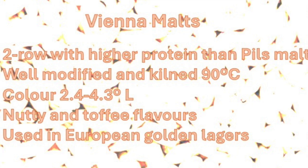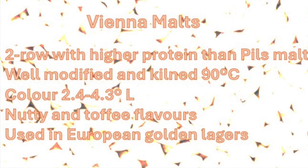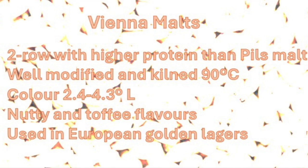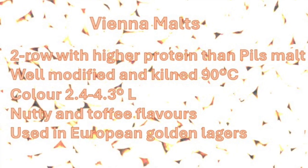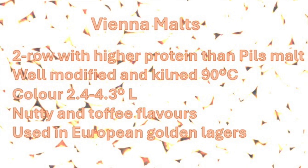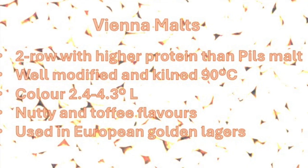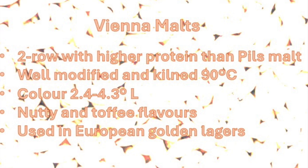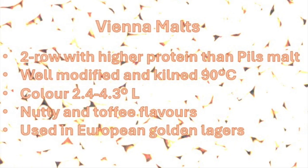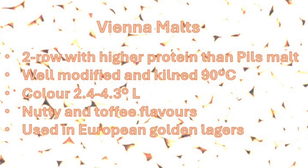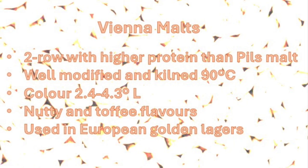Vienna malts are produced from two-row barley with slightly higher protein than pilsner malts. The malt is well modified at slightly higher germination temperatures and kilned at about 90°C or 195°F. The color can be between 2.4 and 4.3 Lovibond. The malt has nutty and toffee flavors and is used in the production of European golden lagers.